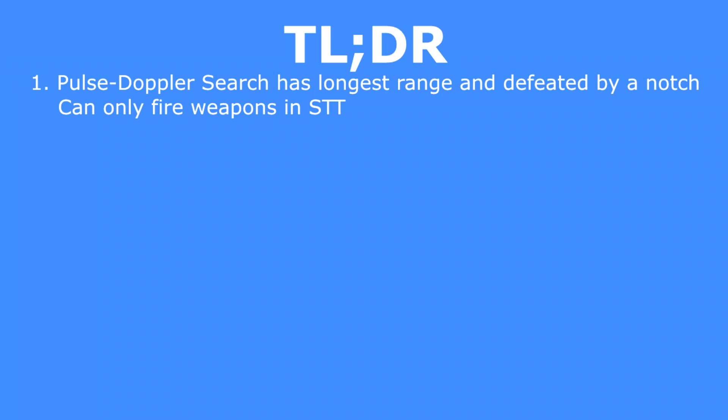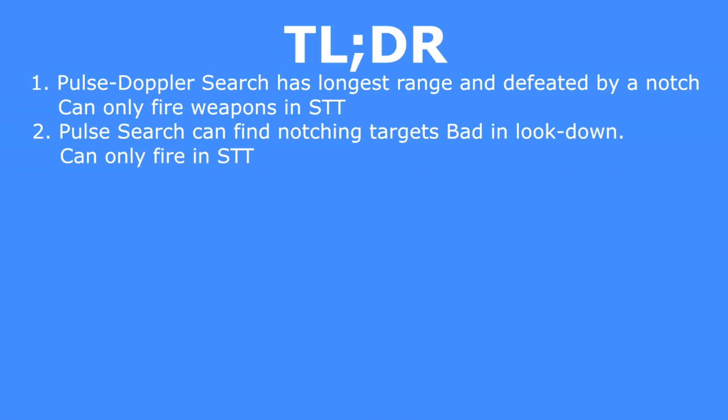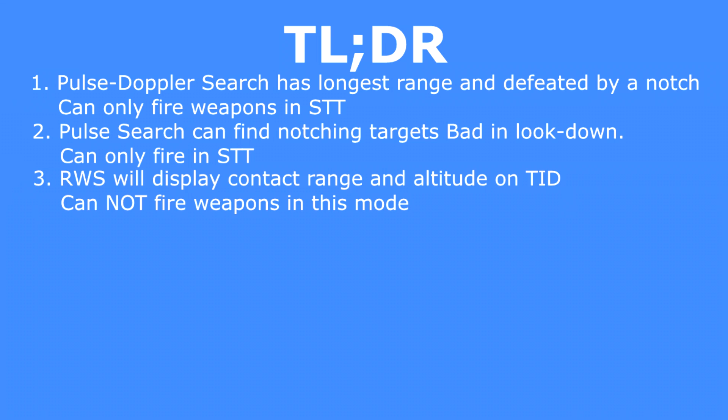Here's the TLDR to make sure you remember the most important points. One: Pulse Doppler search mode has the longest range and is defeated by a target entering the notch filter — you can only fire on targets in single-target track. Two: Pulse search mode can find a target in the notch, but is bad in look-down situations — you can only fire on targets in single-target track.